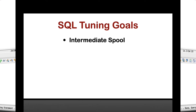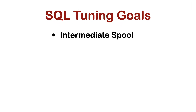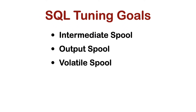Teradata distinguishes four different types of spool space. Intermediate spool: it will be released as soon as it is no longer needed, and is required by derived subqueries. Output spool: holds the result of an SQL request. Volatile spool: used for volatile tables. Persistent spool: spool space that survives a system restart or the crash of a node. We can define the critical workload or the whole system which should be protected with persistent spool.